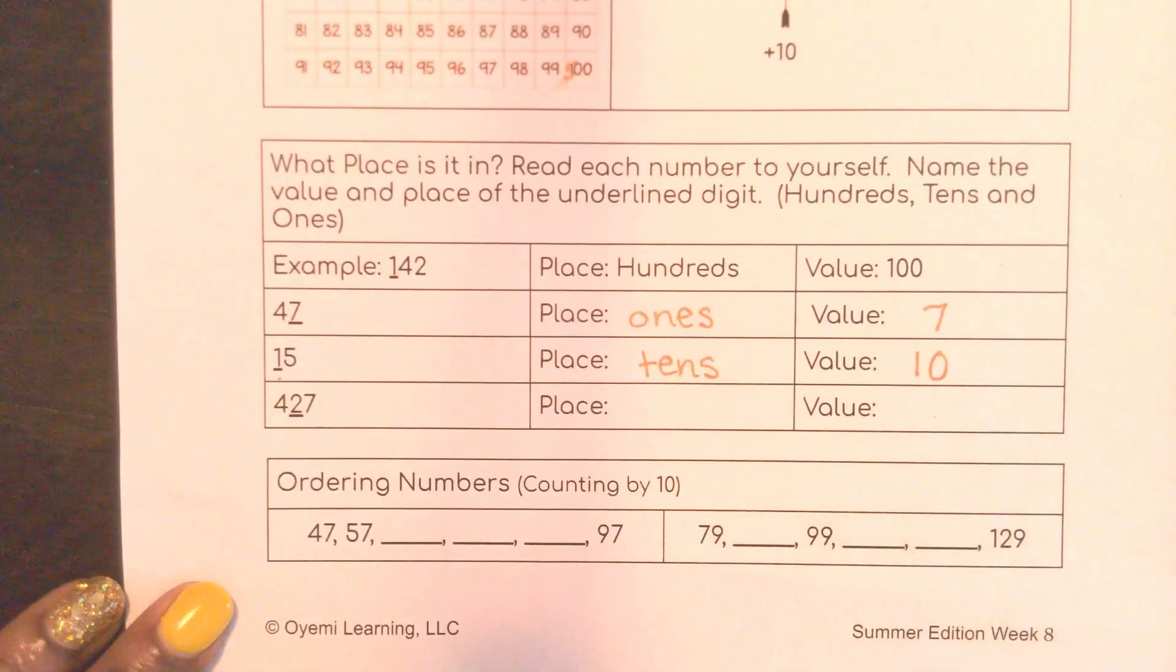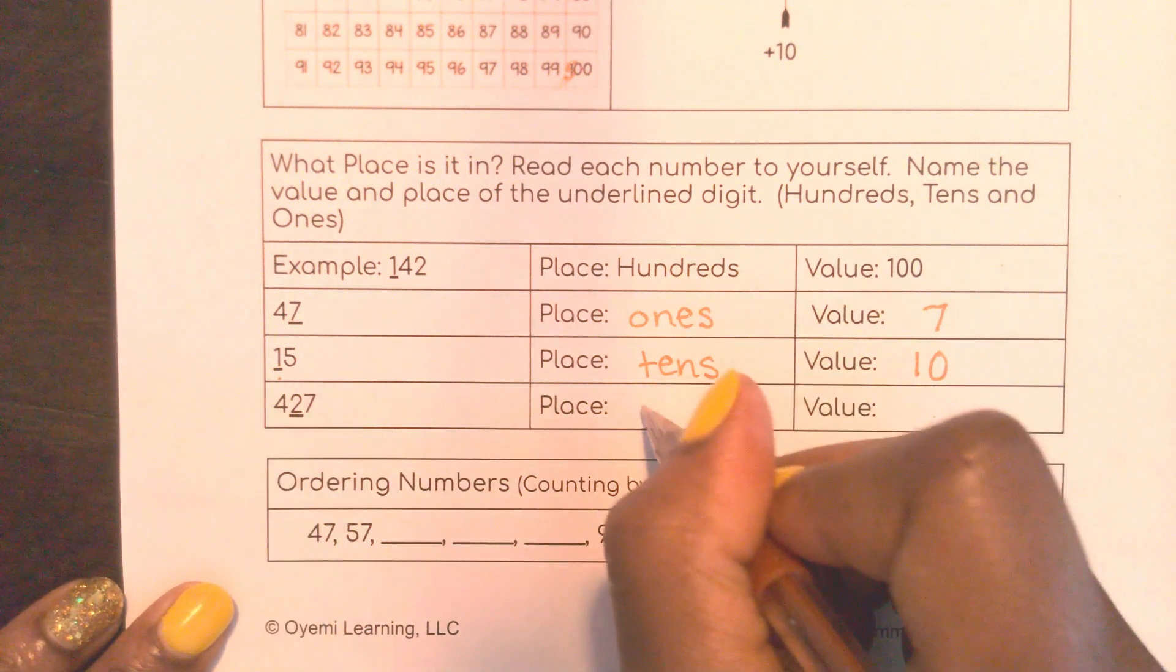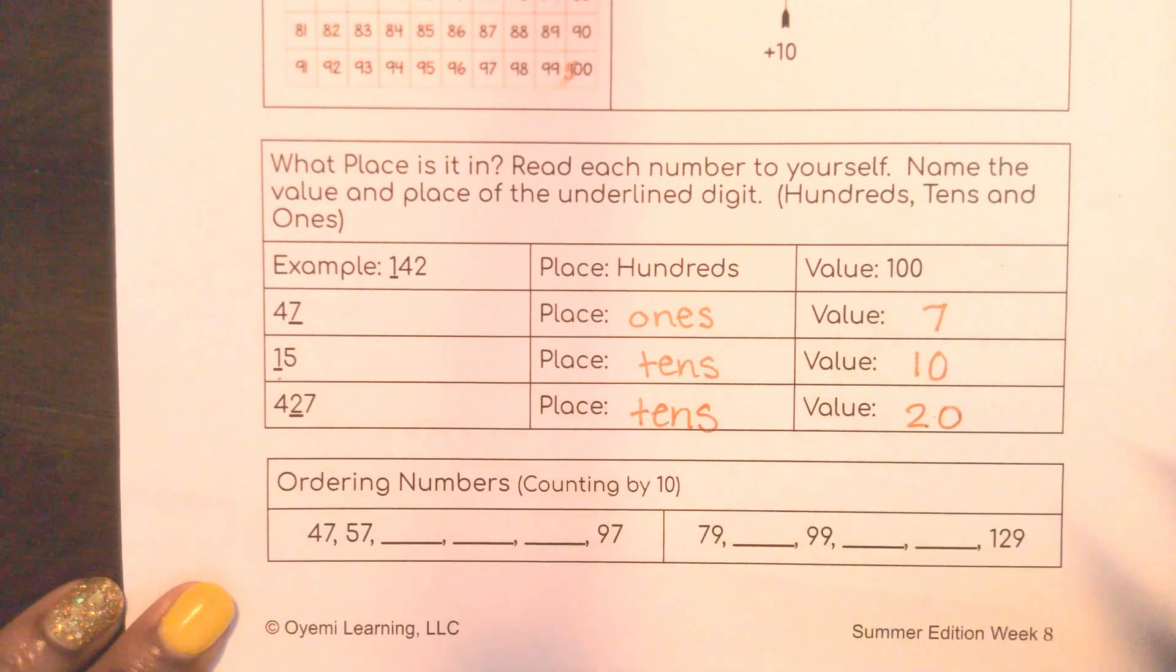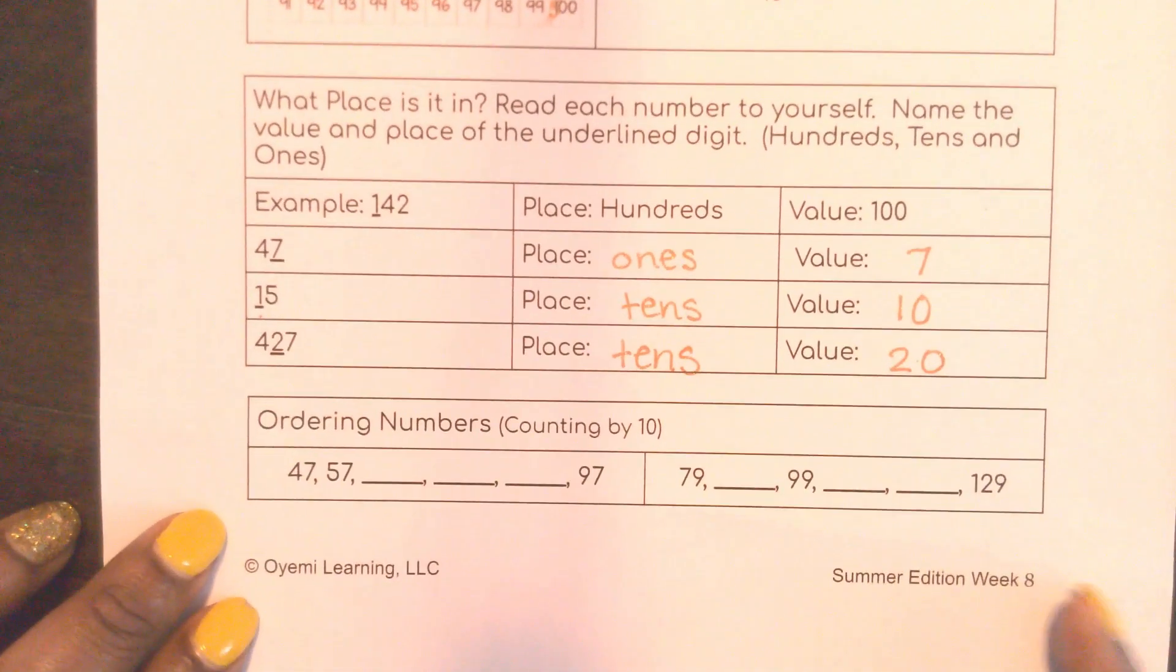Next, I have 427. The 2 is underlined in the 10s place. And the value is 20. Excellent work. I know you got that. We've been practicing that this whole time.